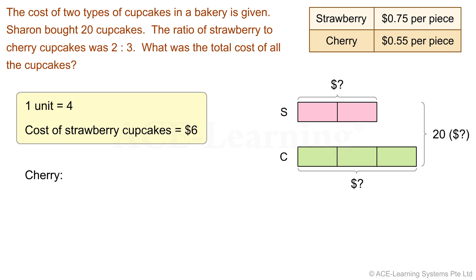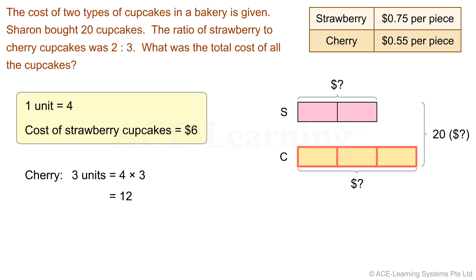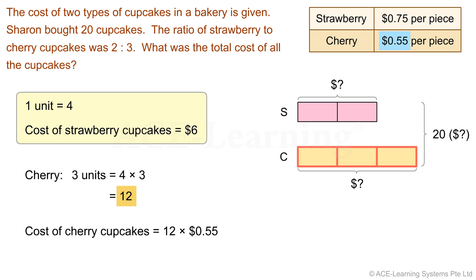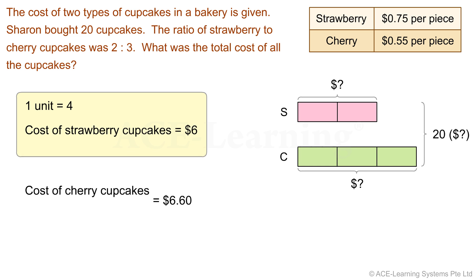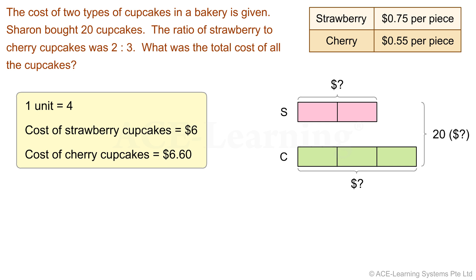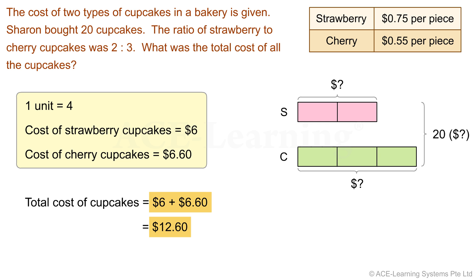Now let's find the total quantity and total cost of the cherry cupcakes. The total quantity of the cherry cupcakes is represented by 3 units. So, 3 units equal 4 times 3, which equals 12. The cost of these 12 cherry cupcakes is 12 times 55 cents, which equals 6 dollars and 60 cents. Now, let's find the total cost of all the cupcakes. The total cost equals 6 dollars plus 6 dollars and 60 cents, which equals 12 dollars and 60 cents.